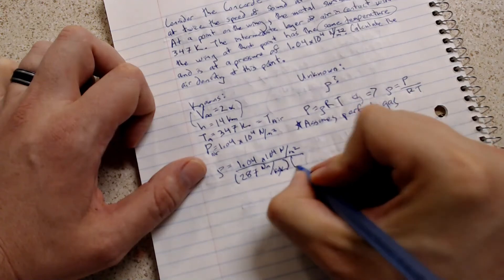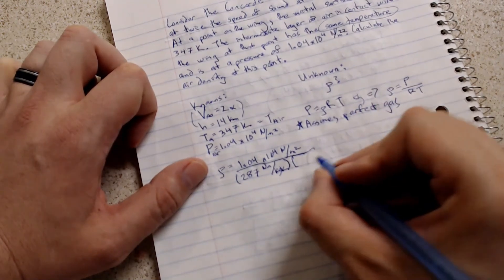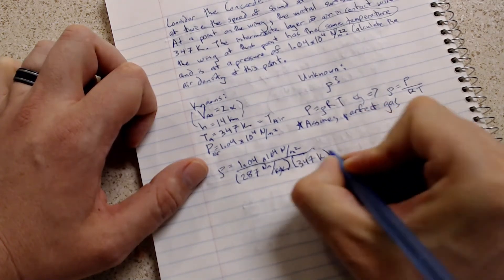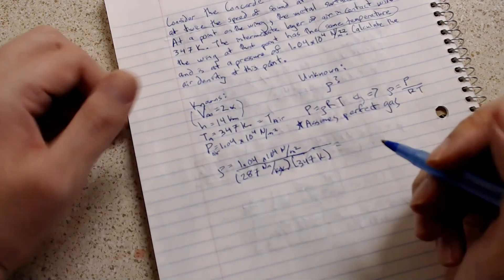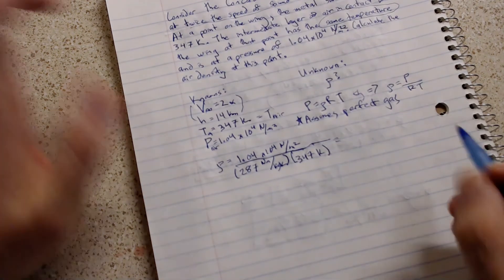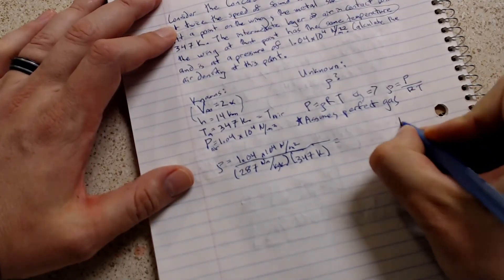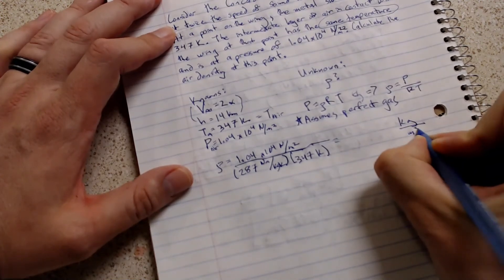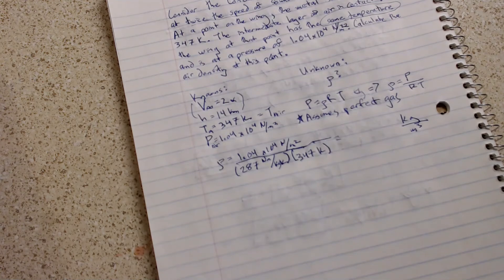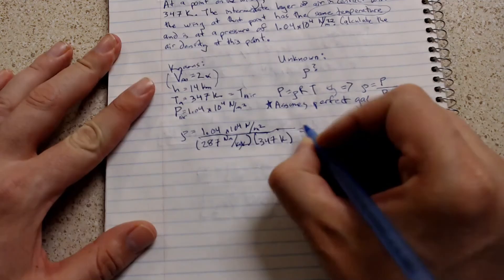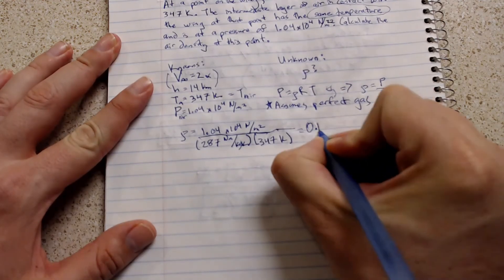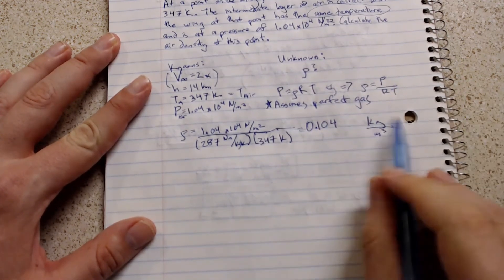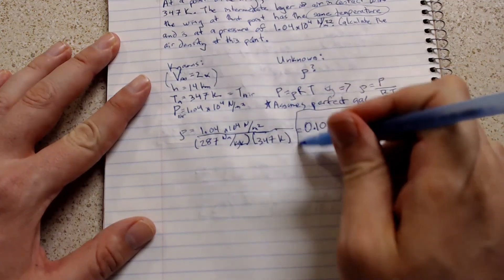Gas constant is 287 newton meters per kilogram Kelvin. Do you have it memorized yet? And then, of course, the temperature, which is going to be 347 Kelvin. You're going to go ahead and just get the standard unit out. Kilograms per cubic meter. So, let's go ahead and plug and chug into our calculator. We can get an answer of 0.104 kilograms per cubic meter.